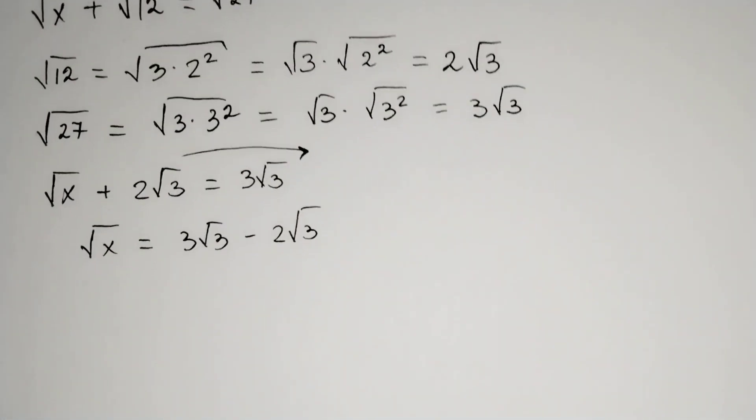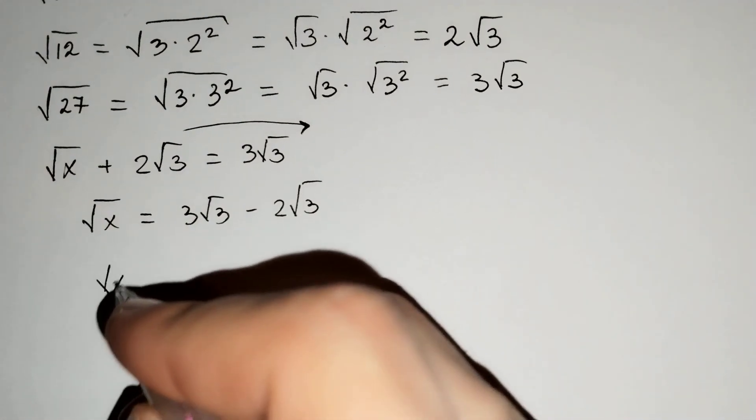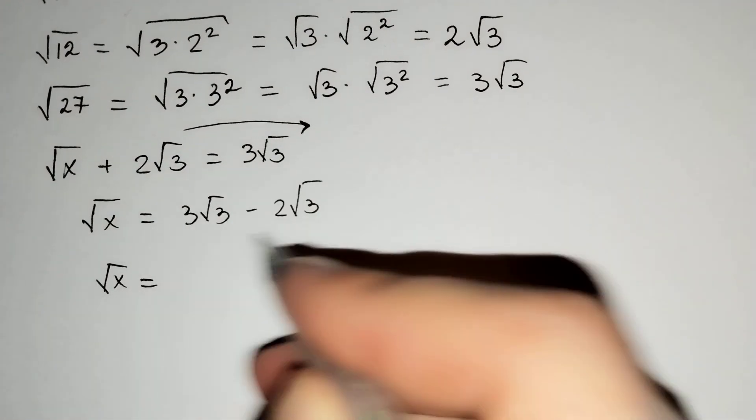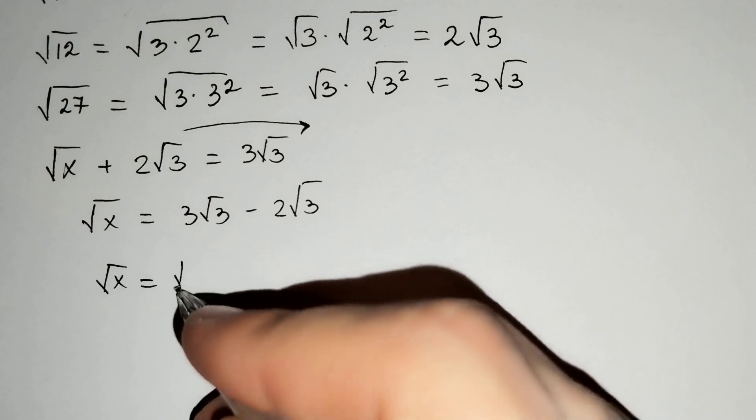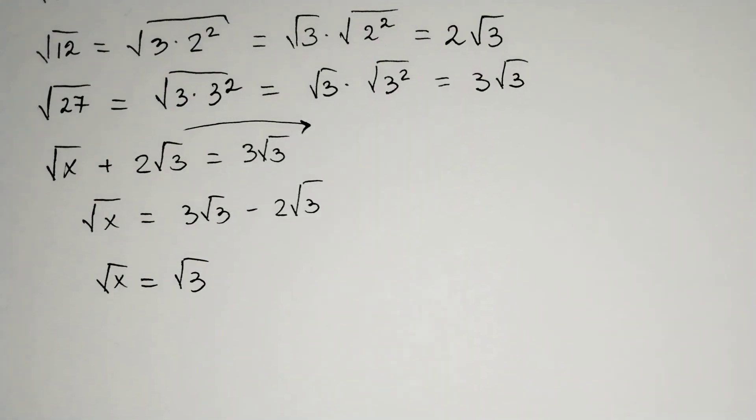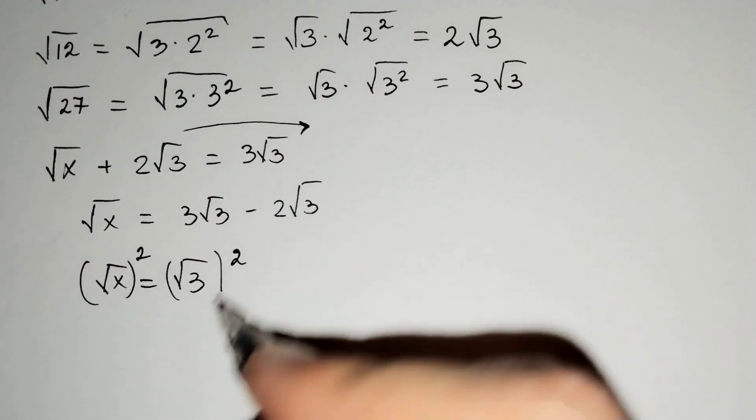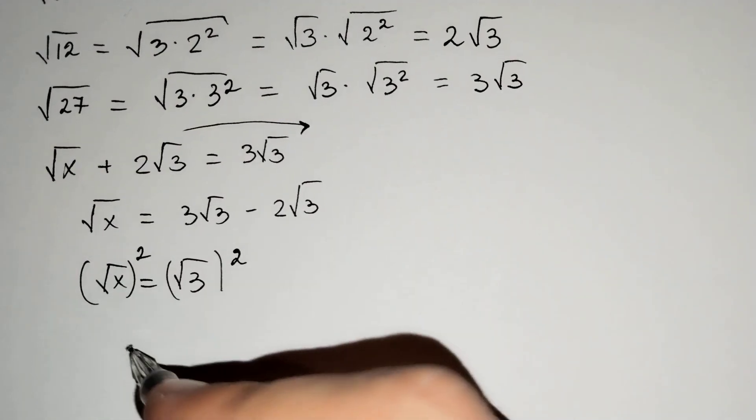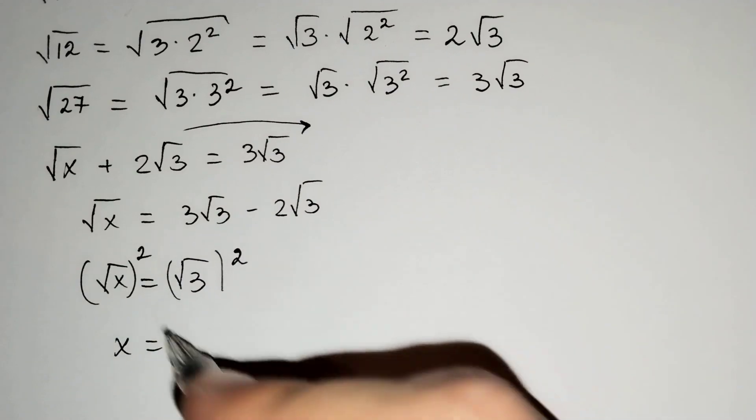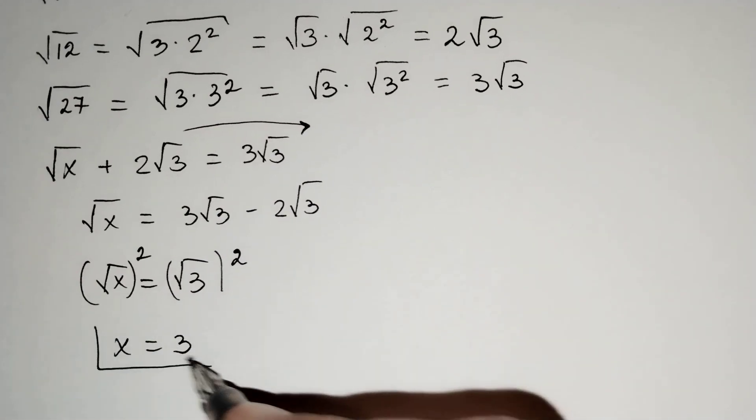Then, the square root of x equals square root of 3. If we raise both sides to the second power, this is equal to x and this is equal to 3. x equals 3.